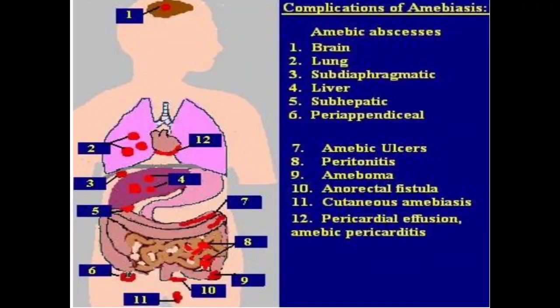Complications of amoebic abscesses include: Brain, Lung, Subdiaphragmatic, Liver, Subhepatic, and Peri-appendiceal — meaning collection of pus near the appendix. Also included are amoebic ulcers and peritonitis, which means inflammation of the peritoneum.